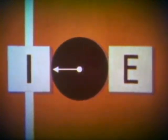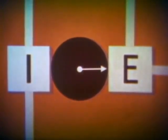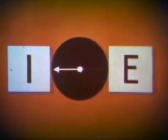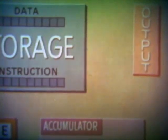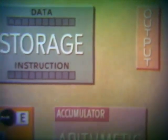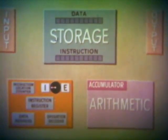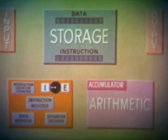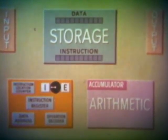The instruction time is always the same for every cycle, since the instruction words are always the same length in a given computer. Execution time, however, varies according to the type of operation involved, and may be long or short. The final instruction in the program calls for transferring the solution from the accumulator to the output. The control operation is, of course, much more complex than shown here — there are more components, logical decisions may change instructions, and input and output are controlled. However, you have seen the basic procedure. Incidentally, the names of these components may vary from one computer system to another.